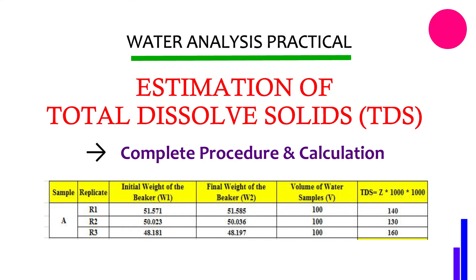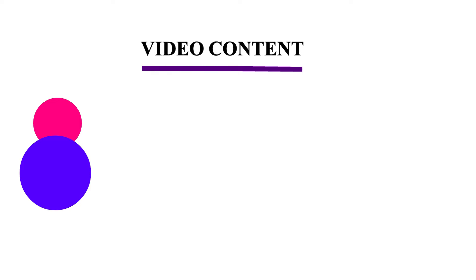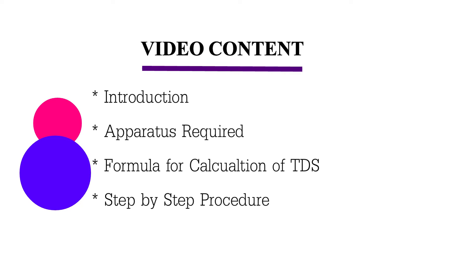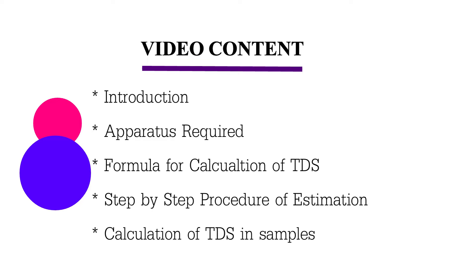In this video, I'll be demonstrating the complete step-by-step procedures involved in the estimation of total dissolved solids in any water samples. The content of this video revolves around the following stages: first, a brief introduction about total dissolved solids; next, the different apparatus required in the laboratory; then the formula used for calculation; followed by the step-by-step lab procedures; and finally, the procedure for calculating TDS using Microsoft Excel.